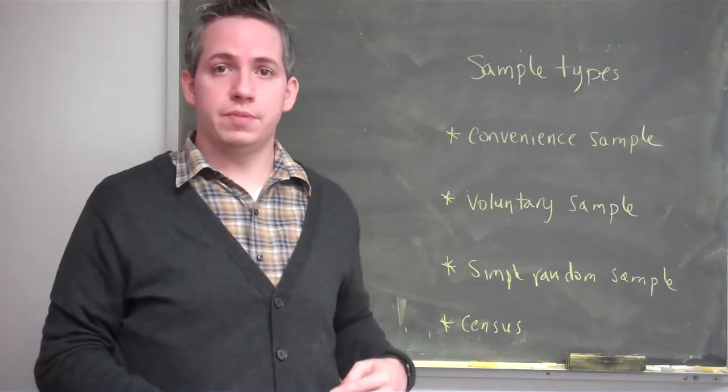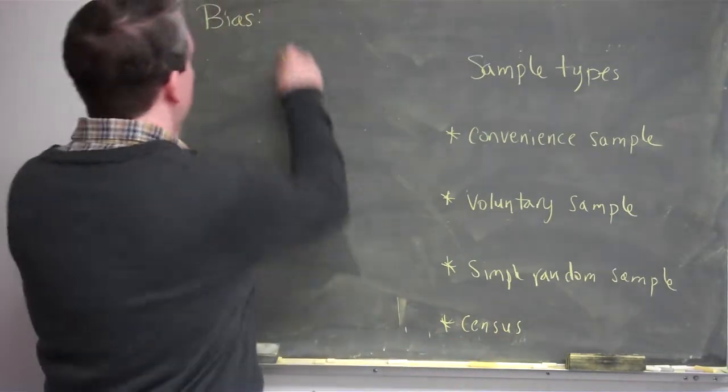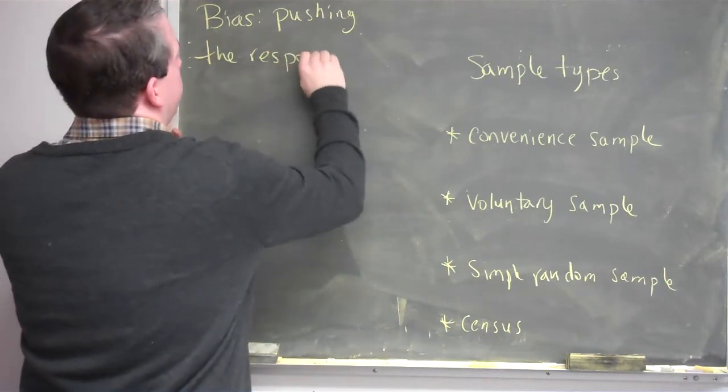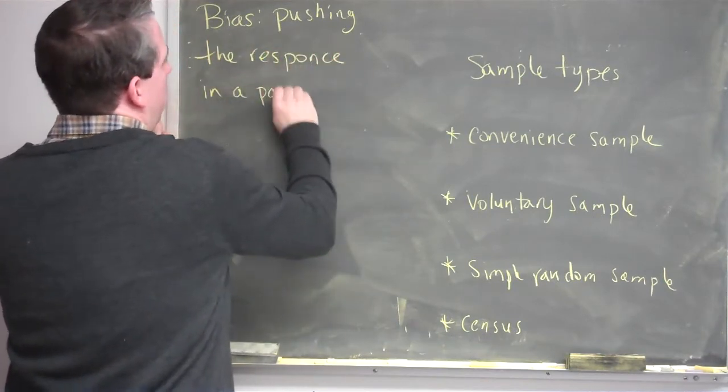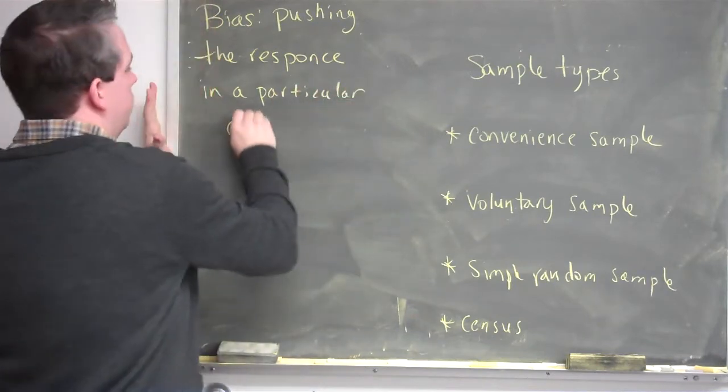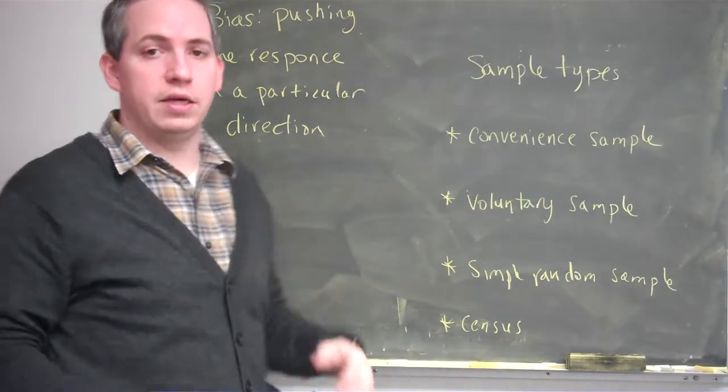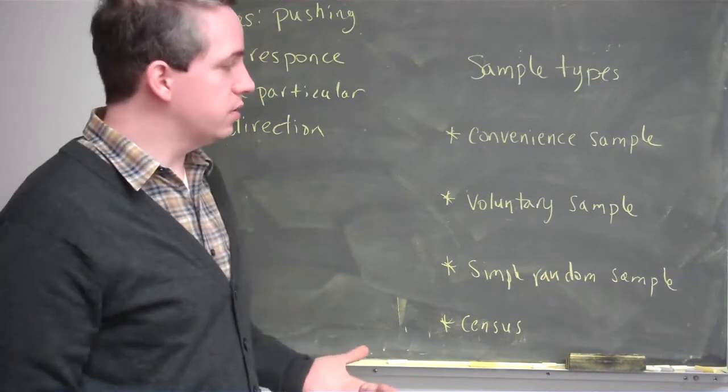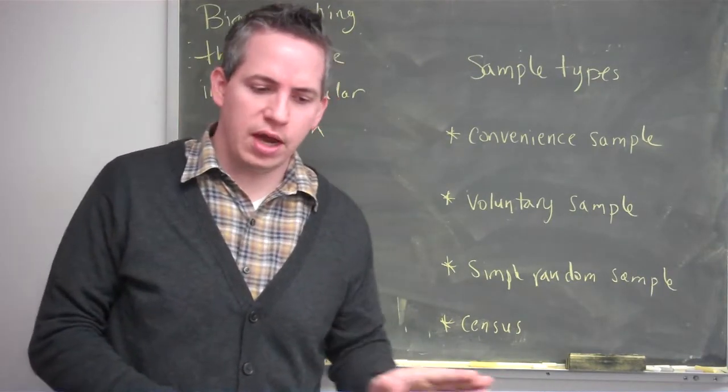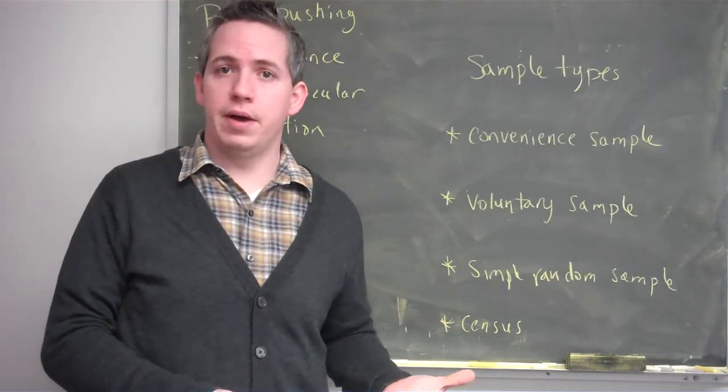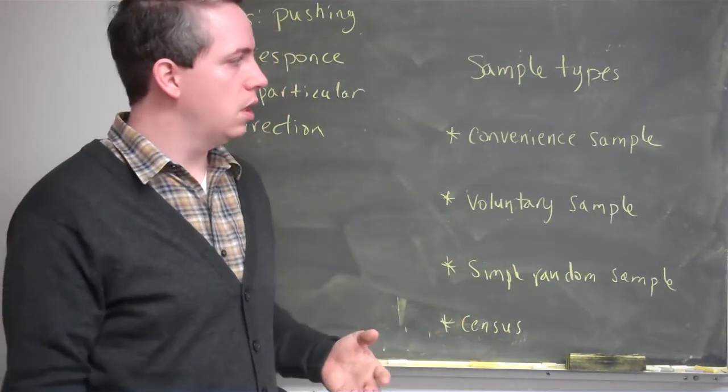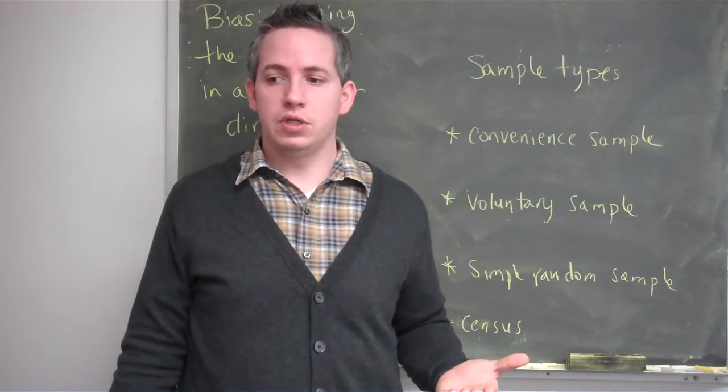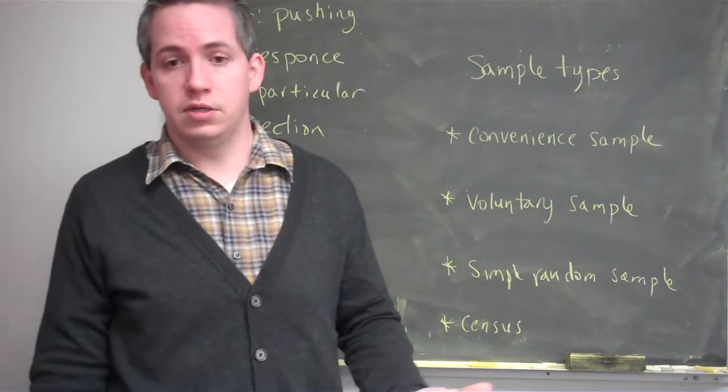Bias is pushing the response on our variable in a particular direction. And as you might suspect, bias is not good. It's fairly bad when we're talking about observational studies. If we ask the question in a certain way or ask certain types of people, we're going to end up pushing our answer in a direction that's not necessarily great.